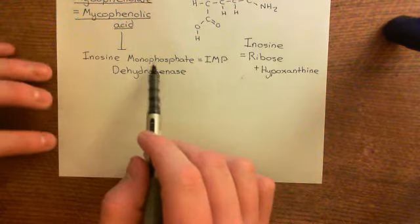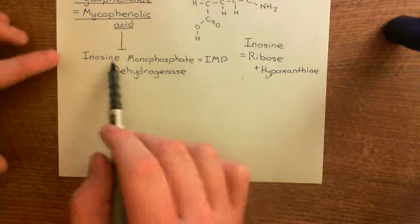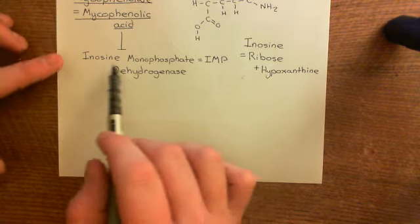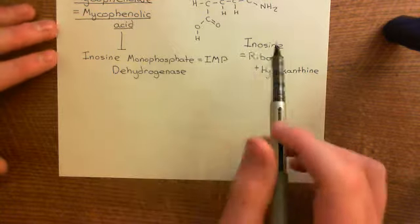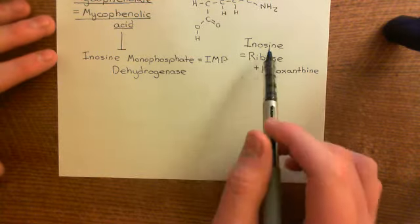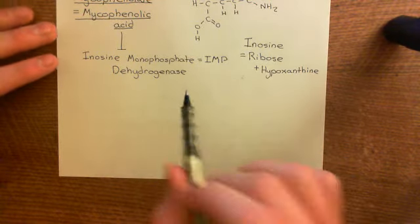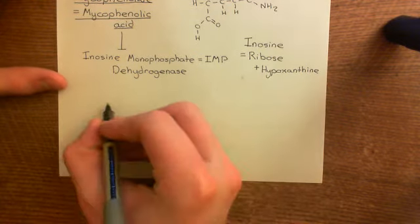Inosine monophosphate is the nucleoside monophosphate — which is a nucleotide — so it is inosine, which is ribose plus hypoxanthine, with a single phosphate group stuck onto it.